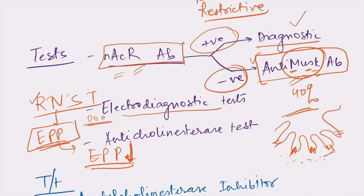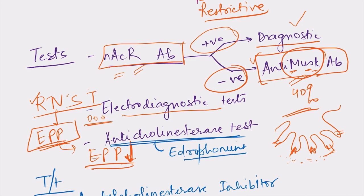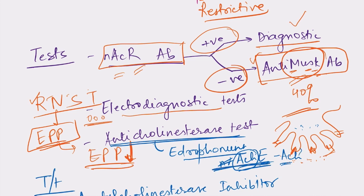If both antibody tests and electrodiagnostic tests are negative, we proceed with the anti-cholinesterase test. We give a drug — edrophonium — which is very short-acting. Edrophonium inhibits acetylcholinesterase, the enzyme that normally breaks down acetylcholine in the synaptic cleft. By inhibiting this enzyme, acetylcholine released from the presynaptic terminal accumulates in the cleft, and despite the decrease in nAChRs, it is able to act more effectively.